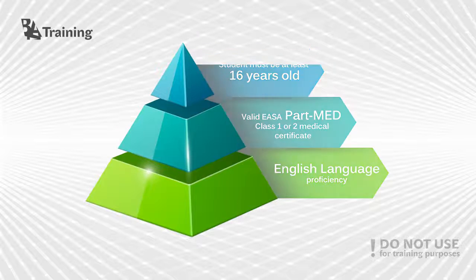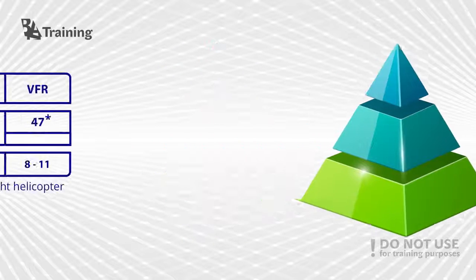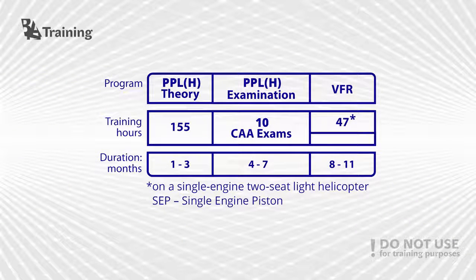Moving on, let's talk about what the course itself consists of. Firstly, there is a theoretical part which is performed at our headquarters in Vilnius, Lithuania. It consists of 155 hours of ground training and includes a total of nine subjects such as aircraft general knowledge, meteorology, navigation, communication, principles of flight, and others.